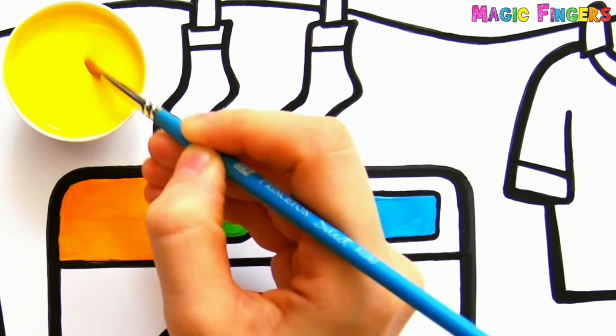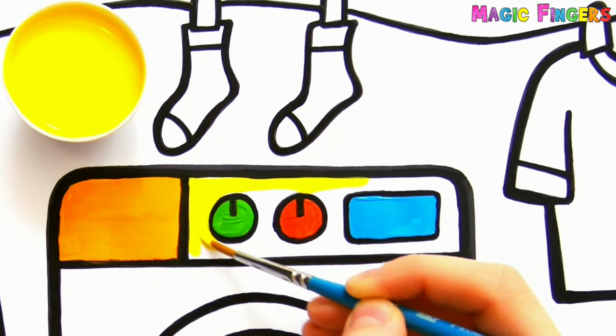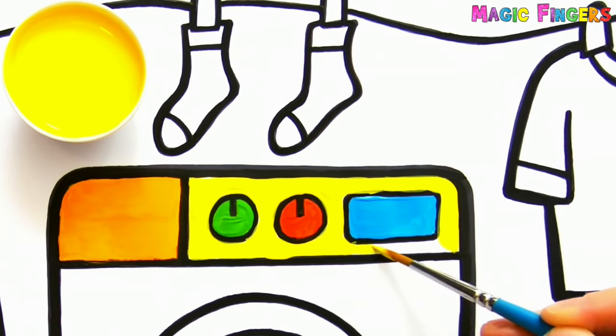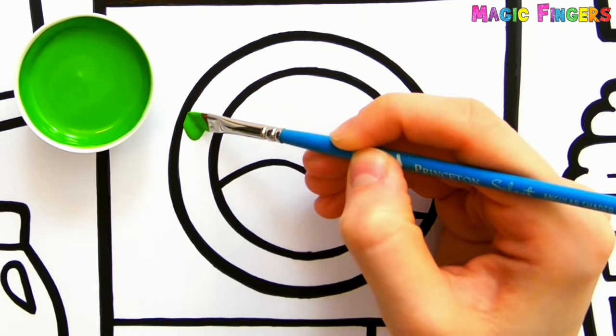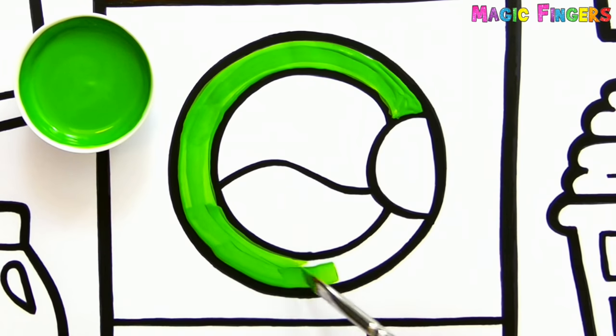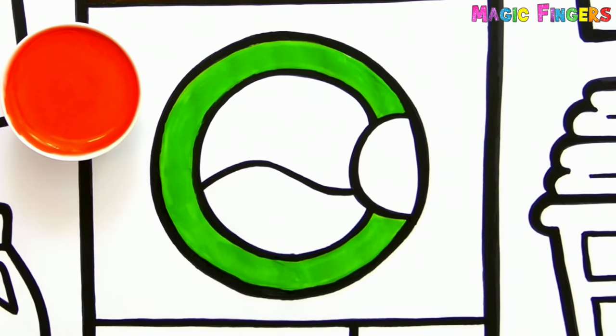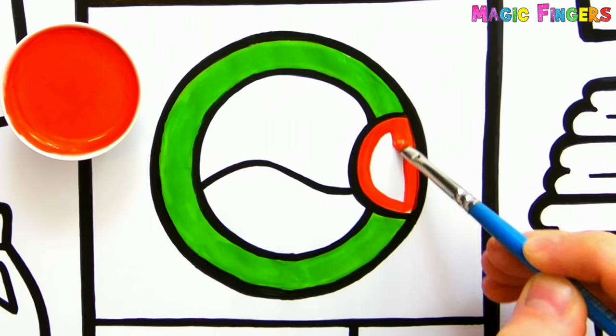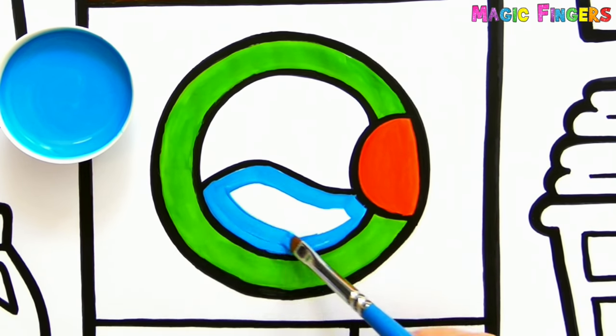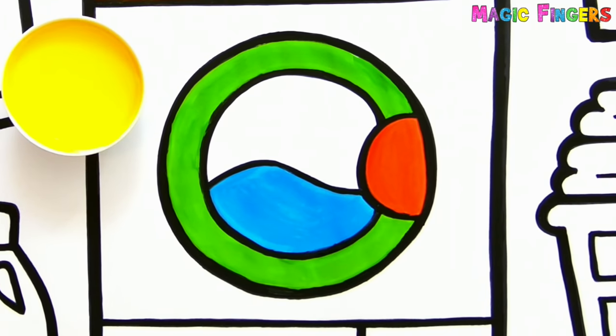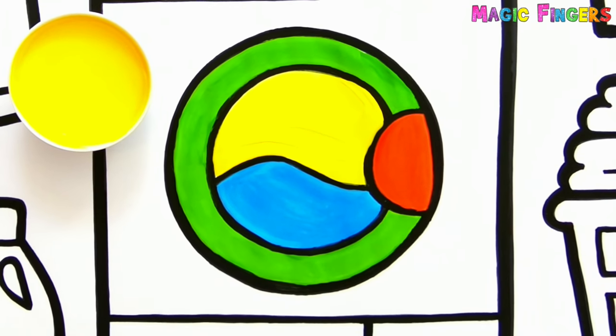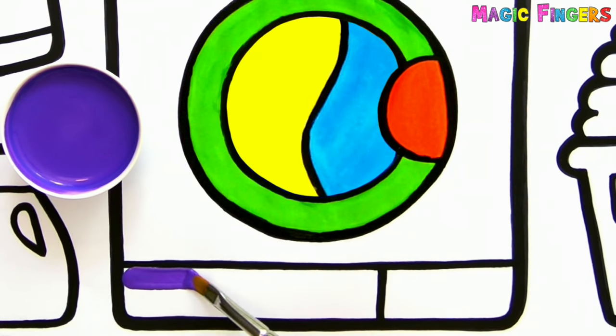Yellow. Green. Blue. Yellow. Purple. Laundries are washing in the washing machine.